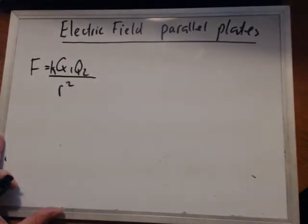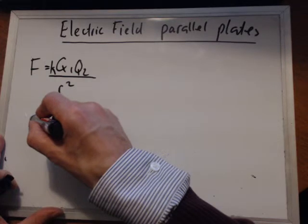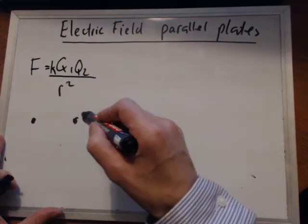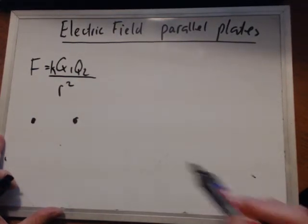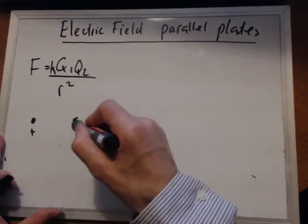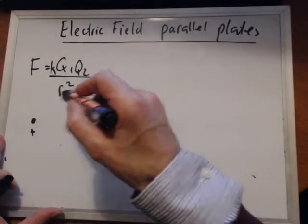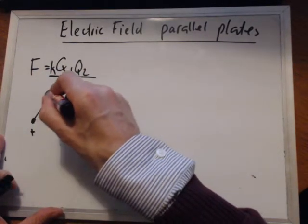Now that applies to points, either spheres or just pinpoints. And they have, if they're both positive for instance, they have what's known as a radial electric field.